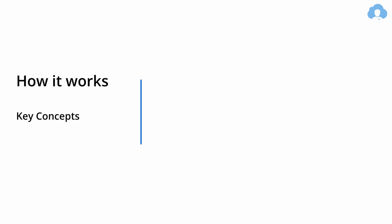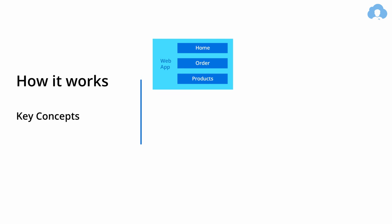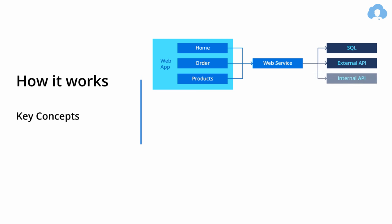So how does it work? Let's imagine a scenario where we have a web application with three pages — home, orders, and products. Those applications will usually call some backend service, like a web service which handles all the requests, generates pages, handles orders, products, and all the things within your web application. And then this web service might have additional services it connects to — because in Azure you pretty much develop everything using components. So this web service might call SQL, some external APIs, or your own internal APIs for additional jobs. For this kind of architecture, it's quite tricky to set up logging, and this is where Application Insights comes in.